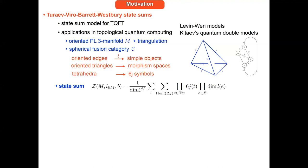One sums over all labelings with simple objects and over dual bases of the morphism spaces for each triangle, with a normalization factor given by the dimension of the spherical fusion category. This gives a number if the manifold has no boundary. If it has a boundary, one fixes the labeling at the boundary and gets a map from a vector space associated with the boundary to the complex numbers — a topological invariant defining the TQFT. The triangulation independence comes from Pachner moves, and the 6j symbols satisfy orthogonality and Biedenharn-Elliott relations, which encode the pentagon relation and invertibility of the associator.